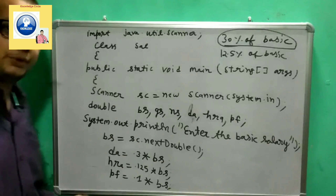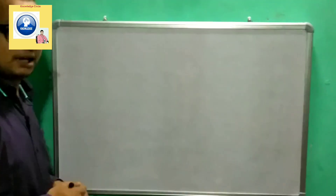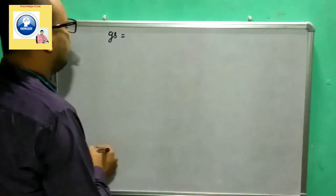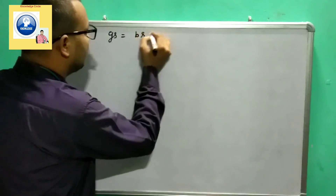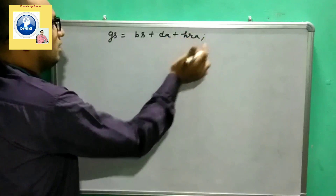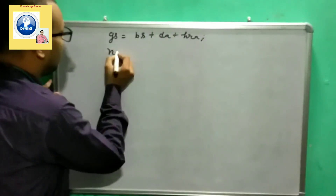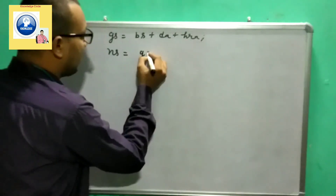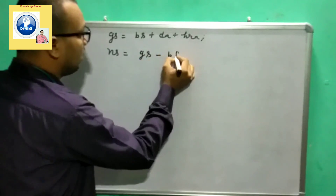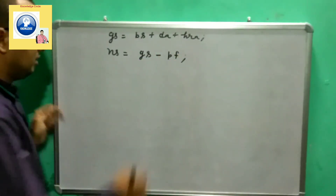Now it's time to calculate gross salary and net salary. Gross salary equals basic salary plus DA plus HRA: gs = bs + da + hra. To calculate net salary, subtract the PF amount from gross salary: ns = gs - pf. So both gross and net salary have been calculated.